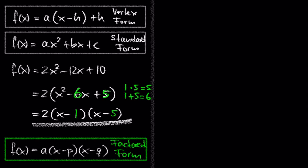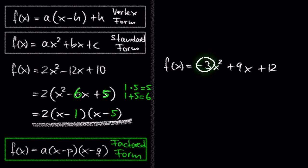Let's do one more example for the sake of practice. f of x equals negative 3x squared plus 9x plus 12. The first step is to factor out negative 3, so we get negative 3 times (x squared minus 3x minus 4).